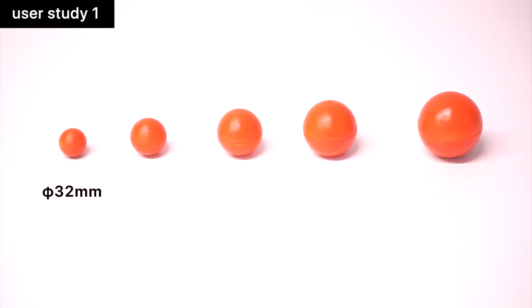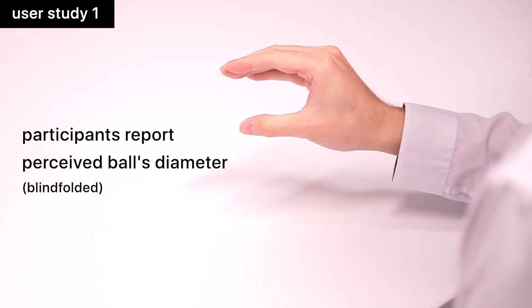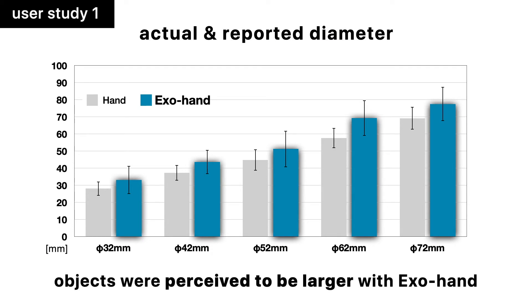We conducted a user study to investigate how the user's perceived object sizes modified by the use of Hand Morph. The result indicated that objects were perceived to be larger than they were when wearing Hand Morph.